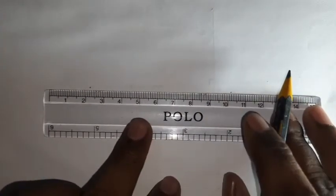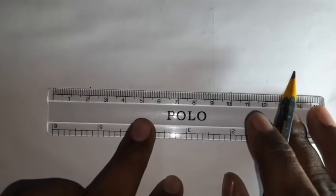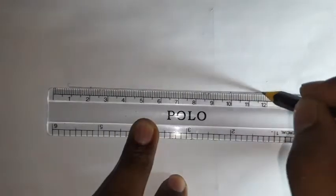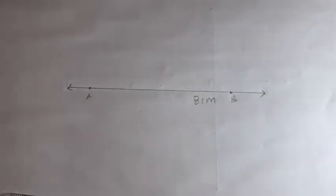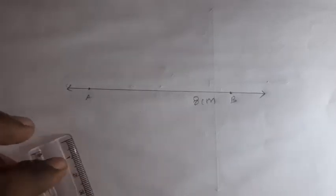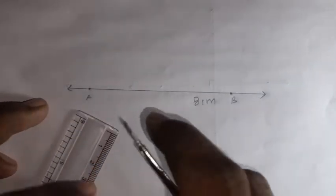So 8 centimeters. First, at zero, mark the dot. At 8, mark the dot. The line, extreme, mark it. In the point, mark A. The other point, mark B. The line segment arrow, mark the point A and the point B. 8 centimeter measurement.